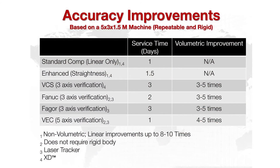A recap of accuracy improvements from each calibration solution: standard and straightness compensation gives good improvement, but provides no correction for angular error and only confirms accuracy at the measured location. The VCS three-axis verification takes about three service days and yields three to five times improvement, correcting for pitch, yaw, roll, straightness, and position. The FAGOR three-axis verification also takes three days with three to five times improvement. VEC, a five-axis verification, takes only one service day and yields four to five times improvement.